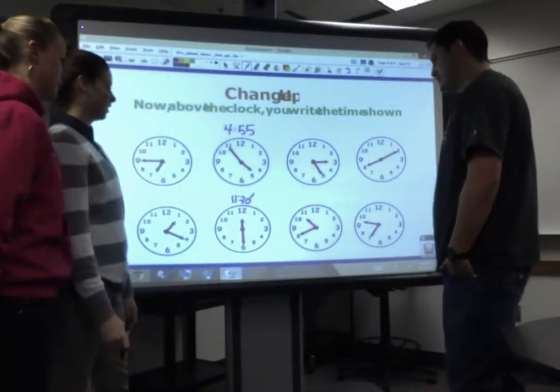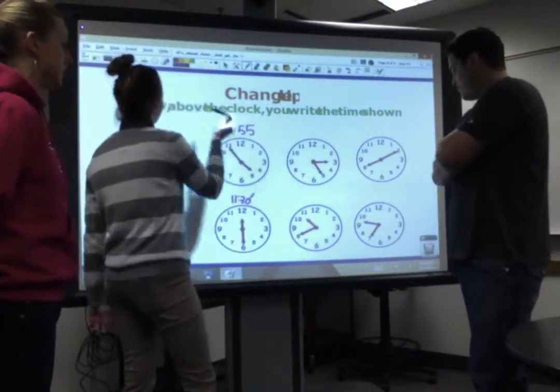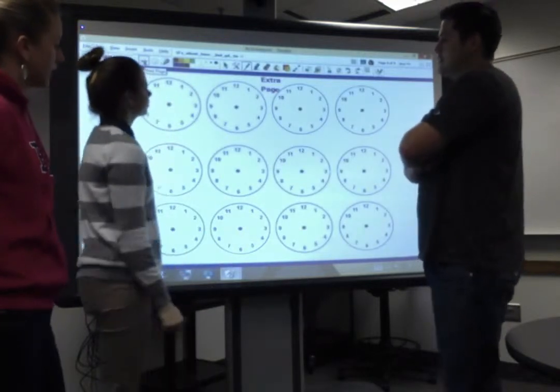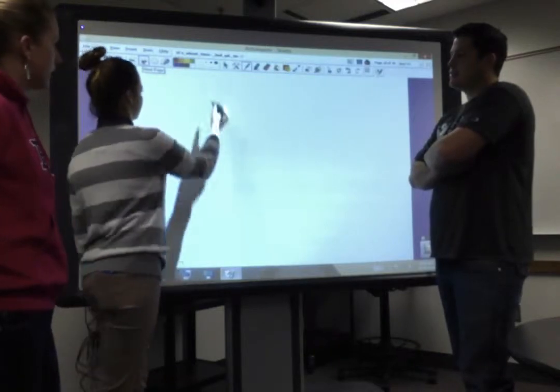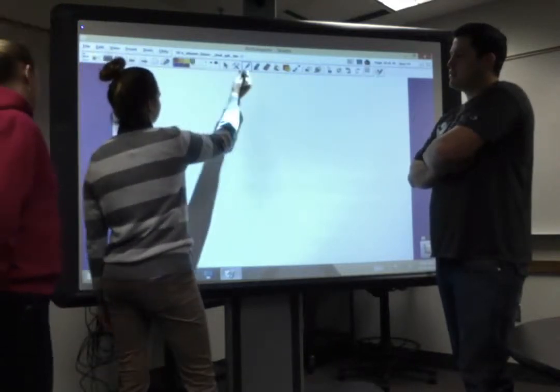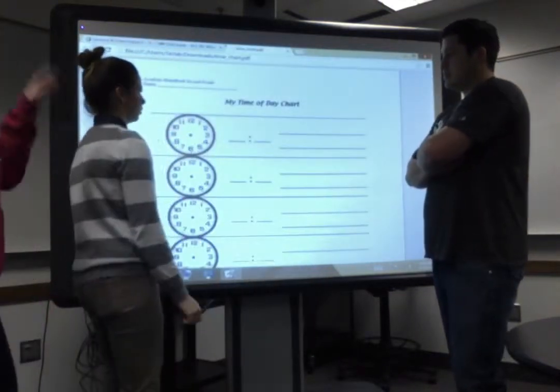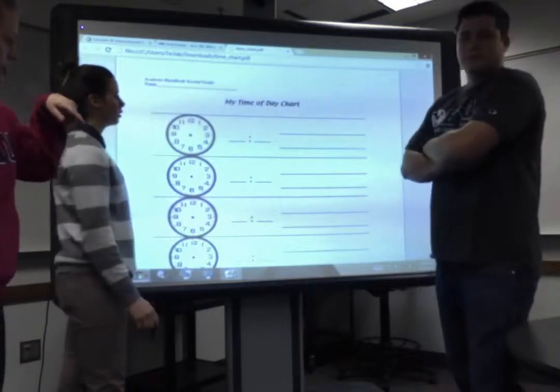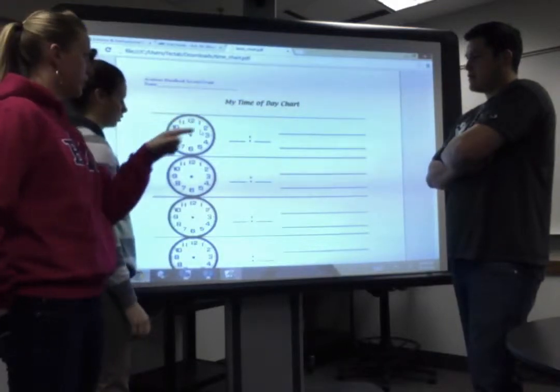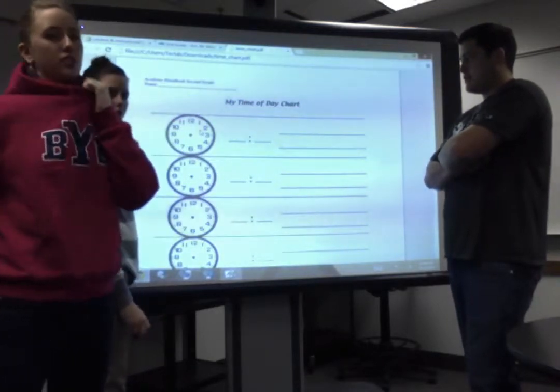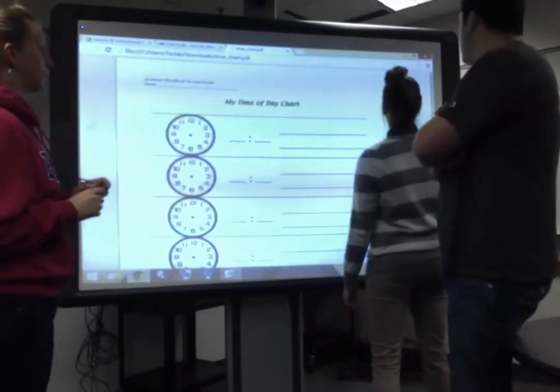So maybe when we were making this lesson for our students, we might want to make it a little bit more clear about what that is. We don't need this page. But we did find on the UEN website this day chart. So you can help the kids write down what time of day they go to lunch. They can write in the hands, write in the time, and then they can describe what they are doing at a certain time of day. It would be really nice and a good worksheet for them to work on after you taught them.